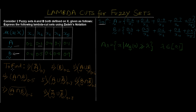In the question we have to find A complement at lambda 0.7. This 0.7 is the lambda value, and we need to find all values of A complement that are greater than or equal to 0.7. That is the basic definition of a lambda cut set. The general formula states: A_lambda is a crisp set equal to all x in the fuzzy set where the membership value is greater than or equal to lambda.